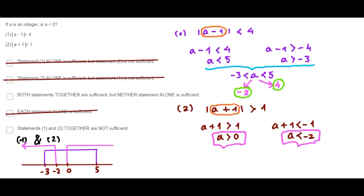From the question stem, we know that a is an integer. There is no integer strictly between negative 3 and negative 2, so there are no valid values in that region. The only valid region is between 0 and 5, where there are many integers. The only values satisfying both inequalities are 1, 2, 3, and 4.